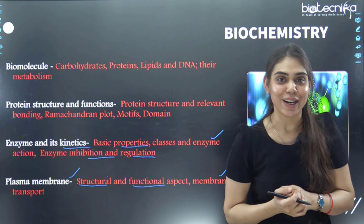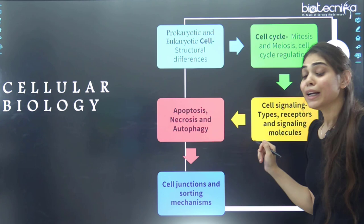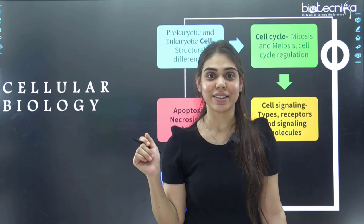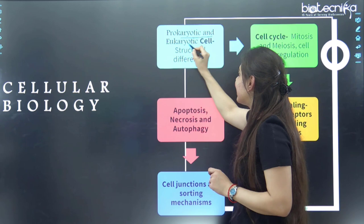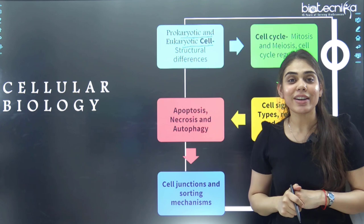Coming to cellular biology — the most favorite unit for students. This is simpler than biochemistry. You should know the prokaryotic and eukaryotic structural differences, which is very simple content we've been studying since bachelors and masters — you just need to recall all those concepts.